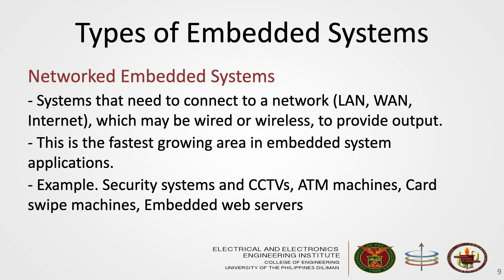The third type is networked embedded systems. These are systems that need to connect to a network to provide output. They can be wired or wireless, and they are the fastest growing area in embedded systems applications. Examples are security systems and CCTVs, ATM machines, card swipe machines, embedded web servers, and so on.